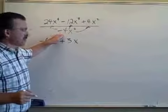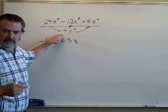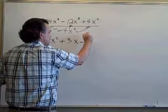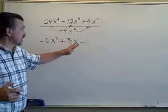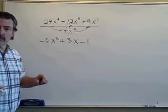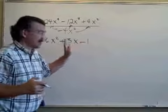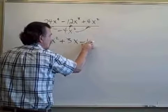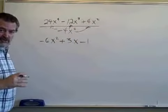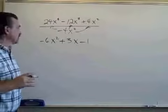Plus 4 divided by minus 4. That's minus 1. Positive 4 divided by negative 4 is negative 1. And x squared divided by x squared cancels to 1. 1 times 1 is 1. So all I have is minus 1 when I perform that division with the last term of the polynomial.